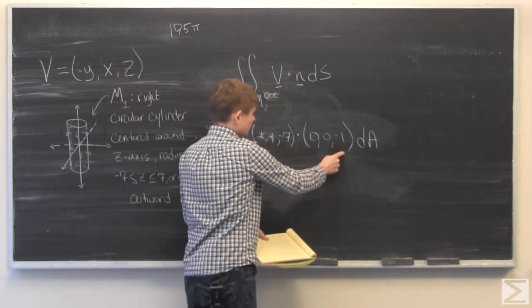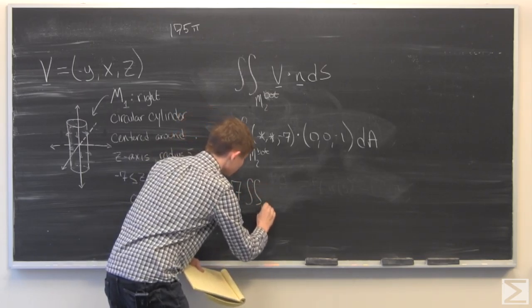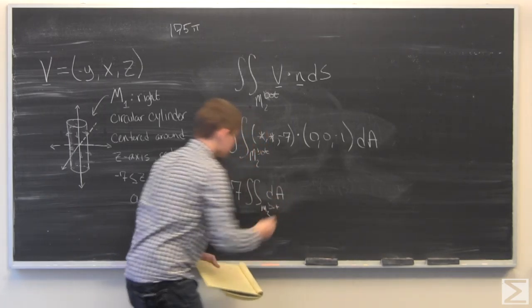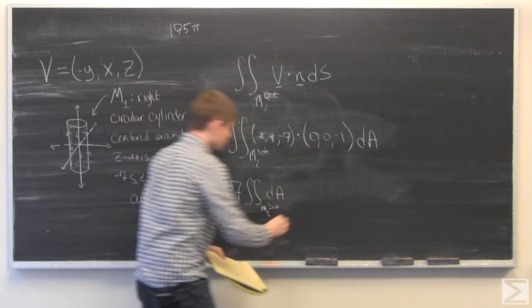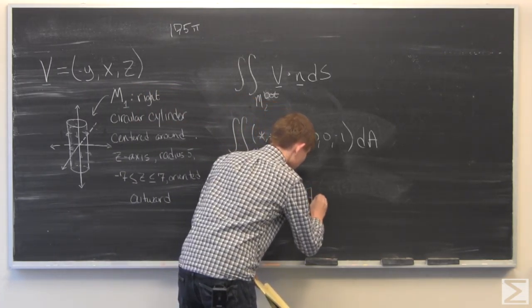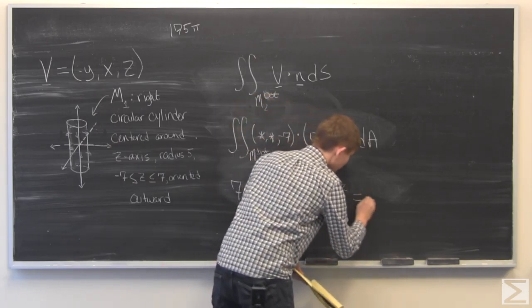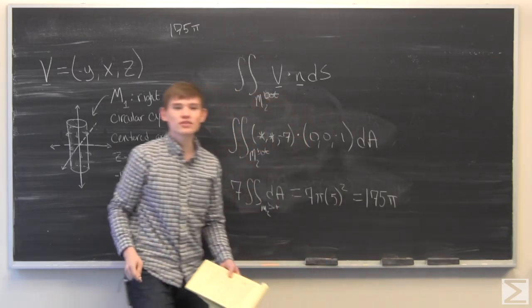Negative 7 times negative 1 is again 7. So we have 7 times the area of this disk, this bottom disk, which is the same thing, it's pi times the radius squared. And so we get another 175 pi.